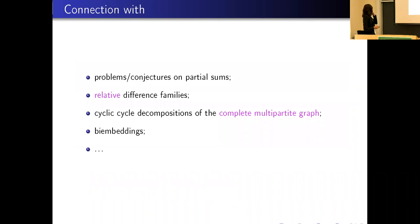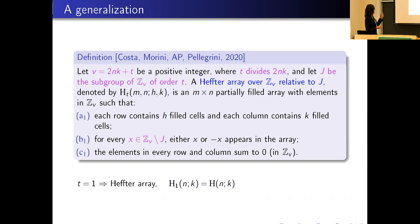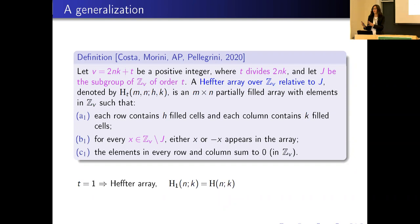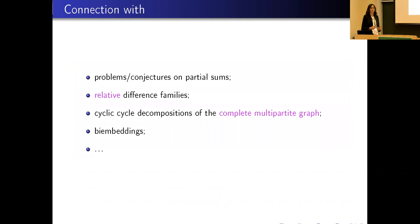We call these arrays Heffter arrays over a cyclic group relative to the subgroup. We use this terminology because it follows the same idea of relative difference families over graphs: you work on a group and must avoid elements of a given subgroup. This generalization is also related to the previous topics, and in particular starting from the array we can construct relative difference families.